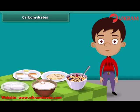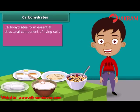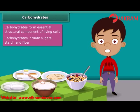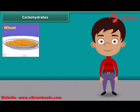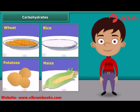First, carbohydrates. Carbohydrates form an essential structural component of living cells. They are the main source of energy for animals. Carbohydrates include sugars, starch, fiber, etc. They are mainly found in wheat, rice, potatoes, corn, and maize.